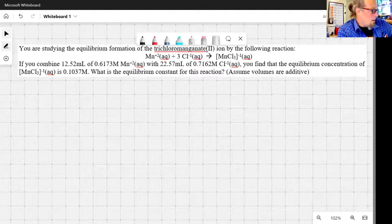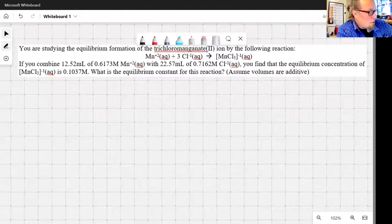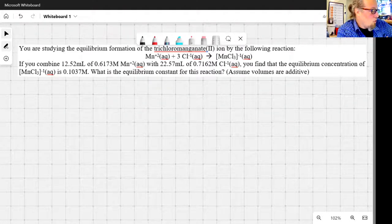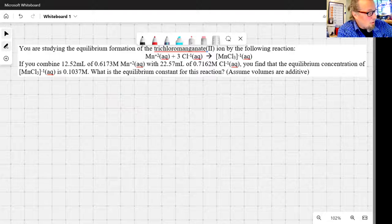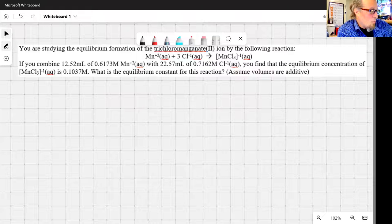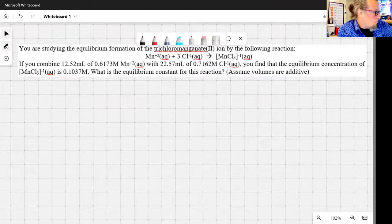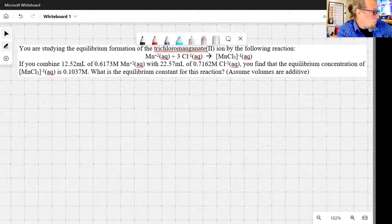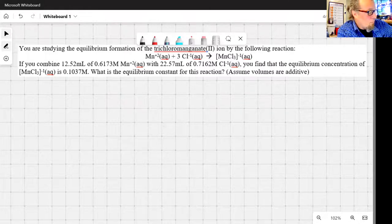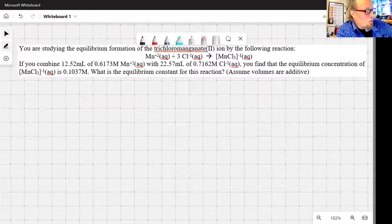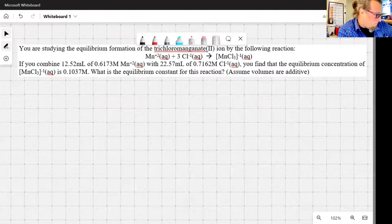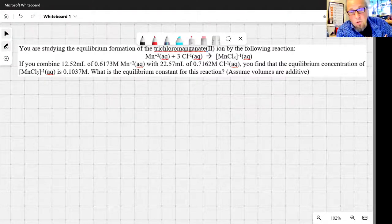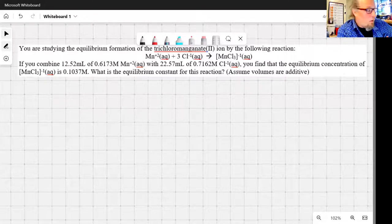If you combine 12.52 milliliters of 0.6173 molar manganese(II) aqueous solution with 22.57 milliliters of 0.7162 molar chloride ion solution, you find that the equilibrium concentration of trichloromanganate(II) ion is 0.1037 molar. What is the equilibrium constant for this reaction?